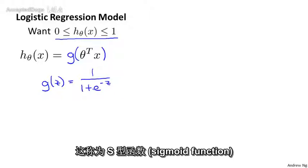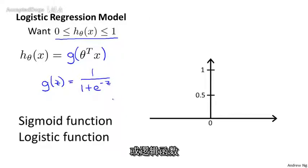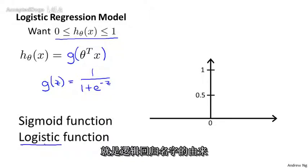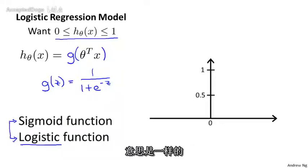This is called the sigmoid function or the logistic function. And the term logistic function, that's what gives rise to the name logistic regression. By the way, the terms sigmoid function and logistic function are basically synonyms and mean the same thing. So the two terms are interchangeable and either term can be used to refer to this function g.